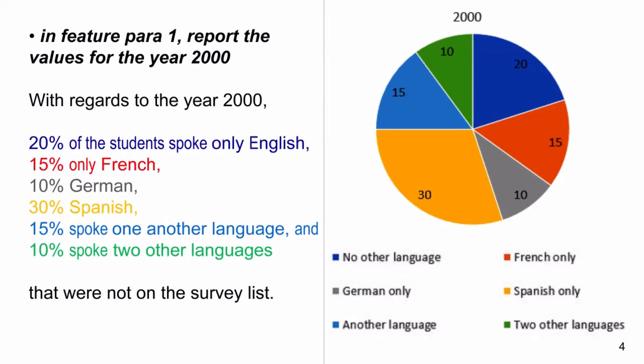In Feature Para 1, report the values for the year 2000. With regards to the year 2000, 20% of students spoke only English, 15% only French, 10% German, 13% Spanish, 15% spoke one other language, and 10% spoke two other languages that were not on the survey list.